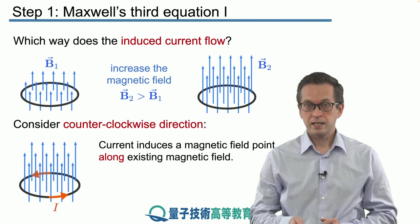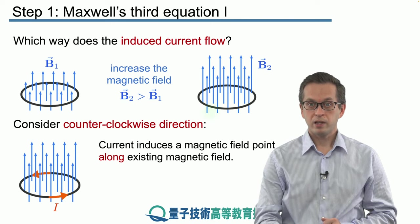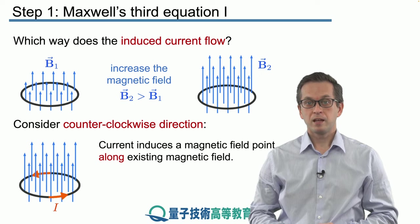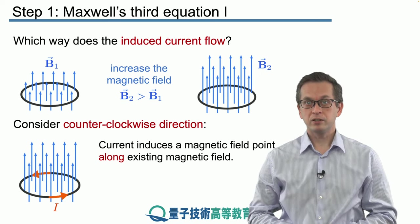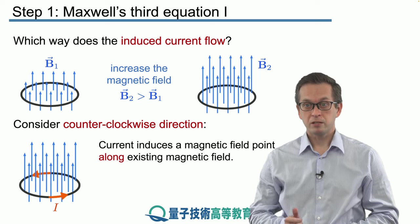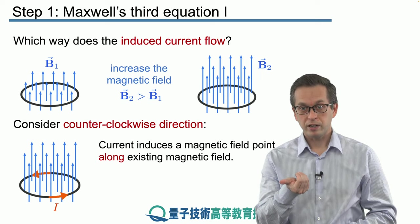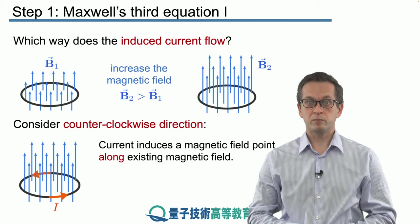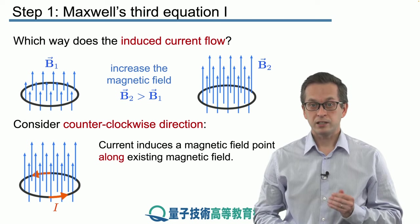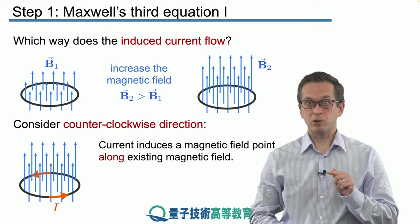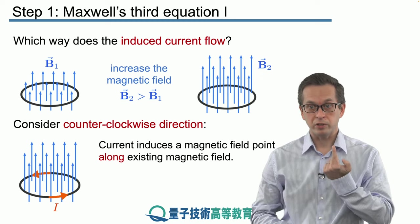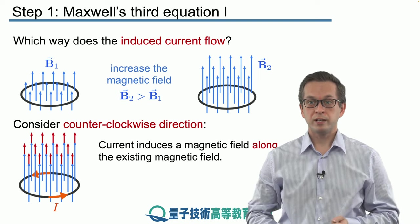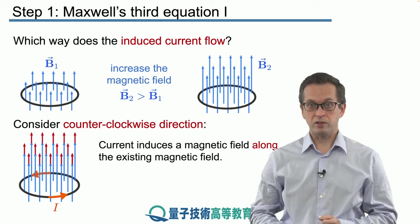Now this current flowing in the loop also induces a magnetic field. The direction of the magnetic field can be determined by the right hand rule. If we point our thumb along the direction of the field, our remaining fingers will point in the direction of the induced magnetic field. Actually, if the current is going counterclockwise, the magnetic field is also pointing up. So the induced current also induces a new magnetic field, increasing the strength of the magnetic field.